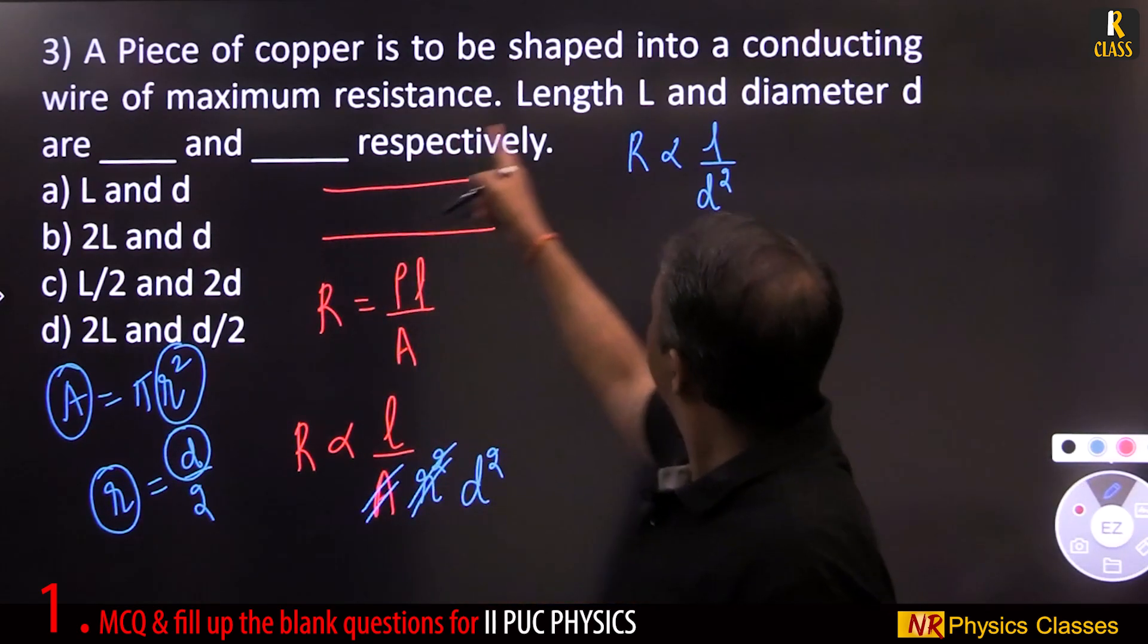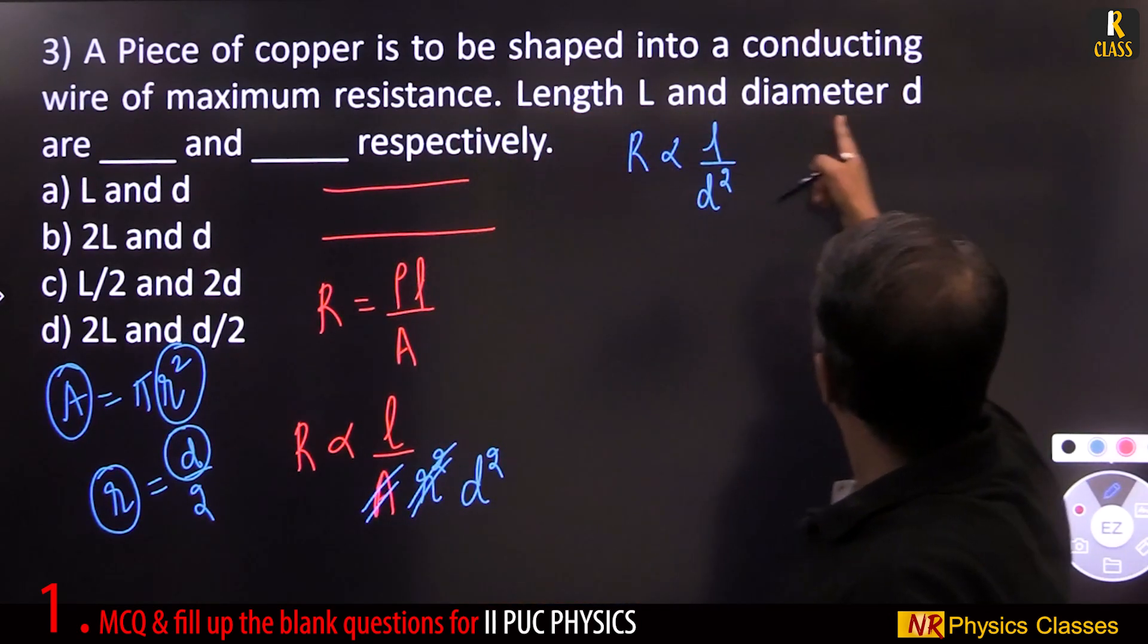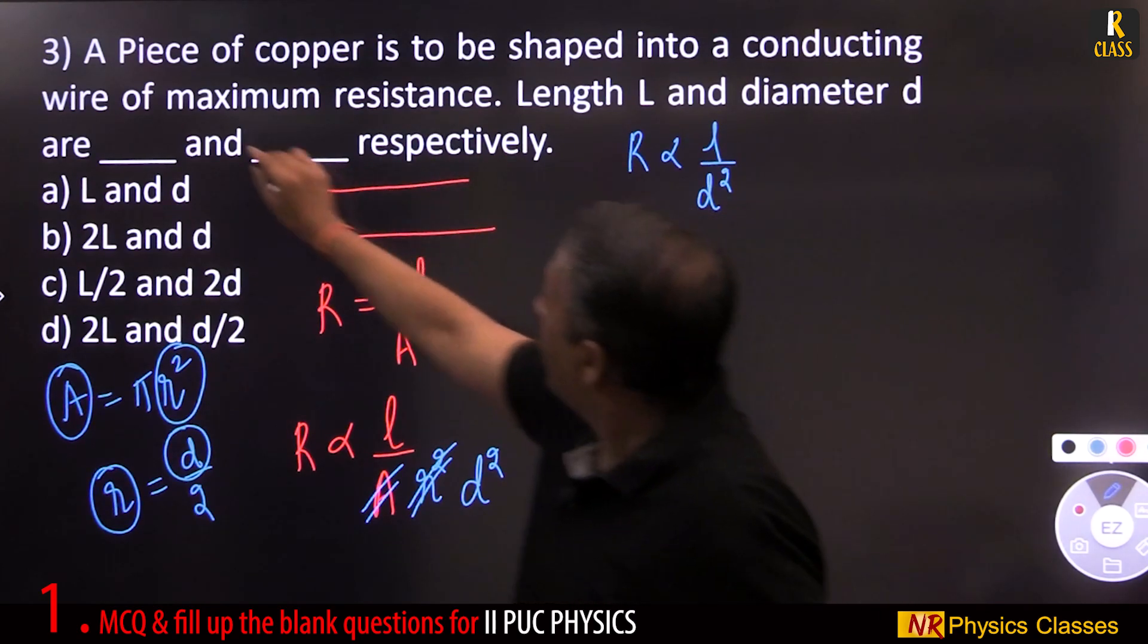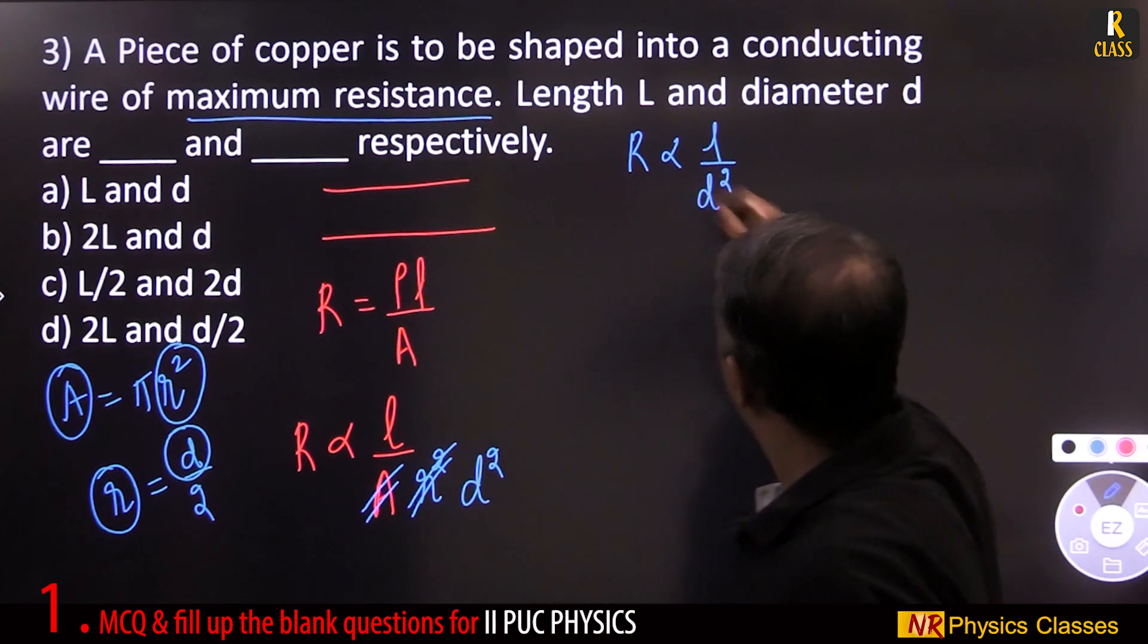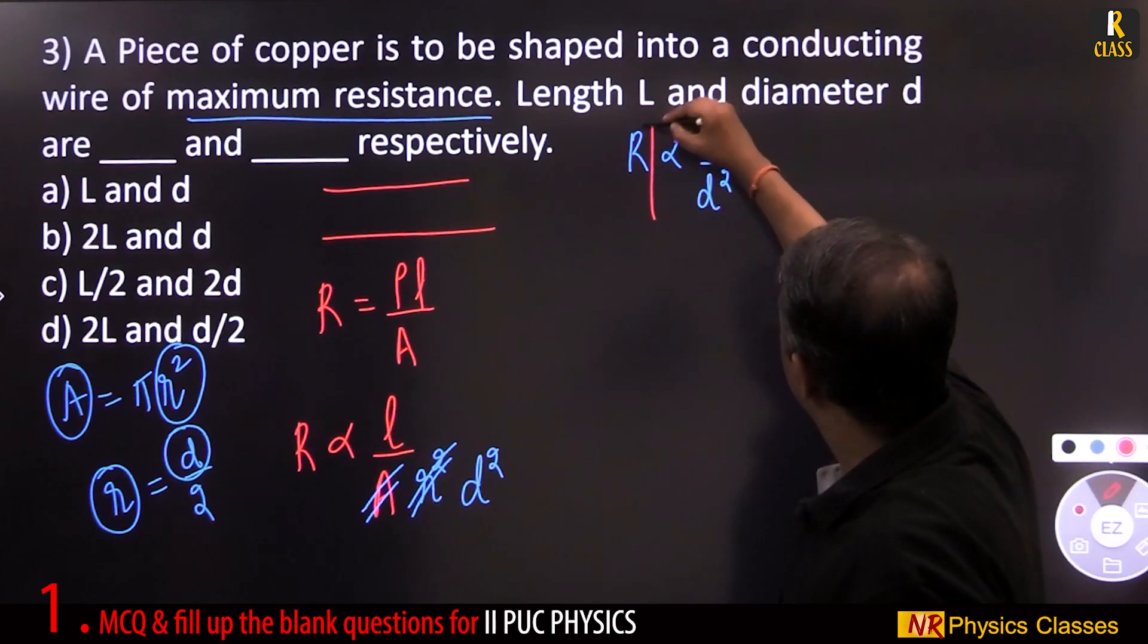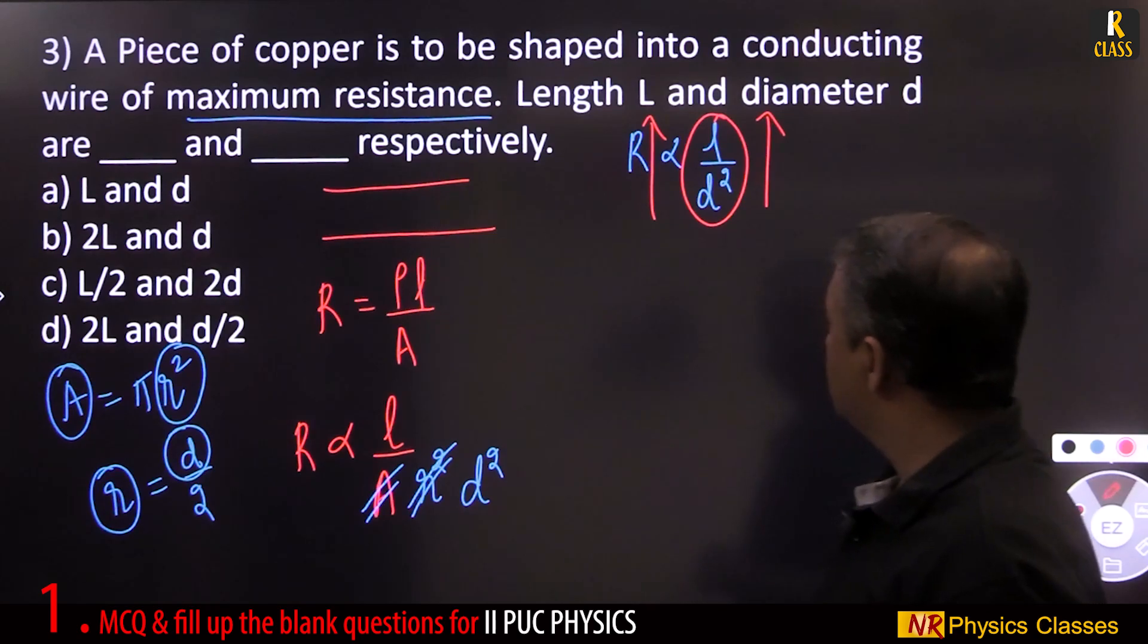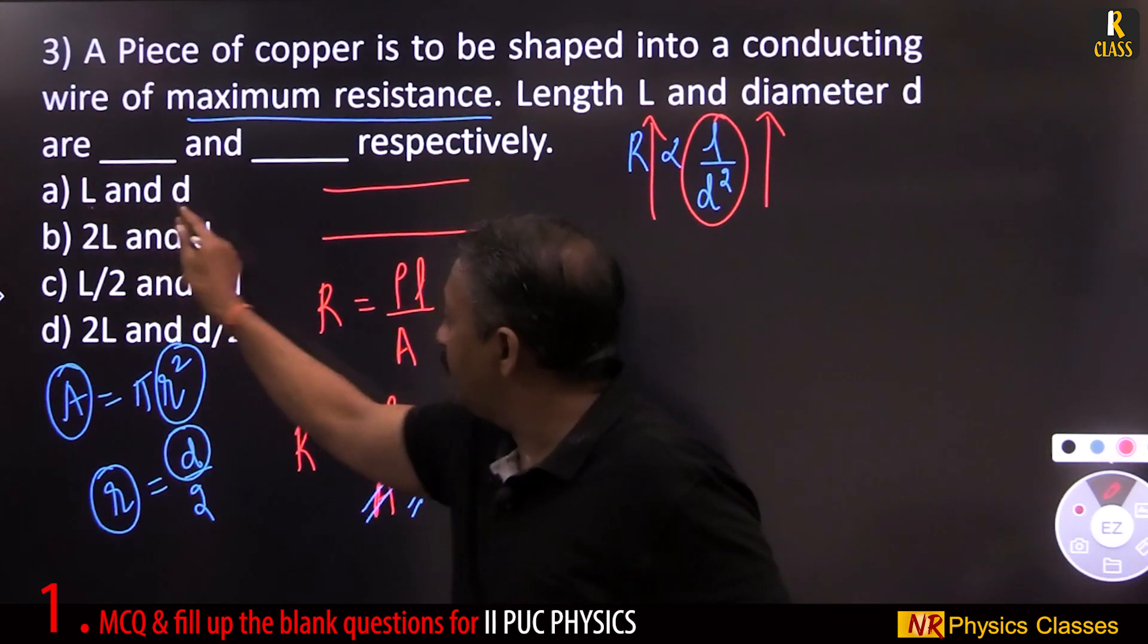Area is proportional to r square, r square is proportional to diameter square because radius equal to diameter by 2. So radius is directly proportional to diameter. So we have r proportional to L by d square, diameter square. Now, for maximum resistance, this ratio should be maximum. We have to check for all.